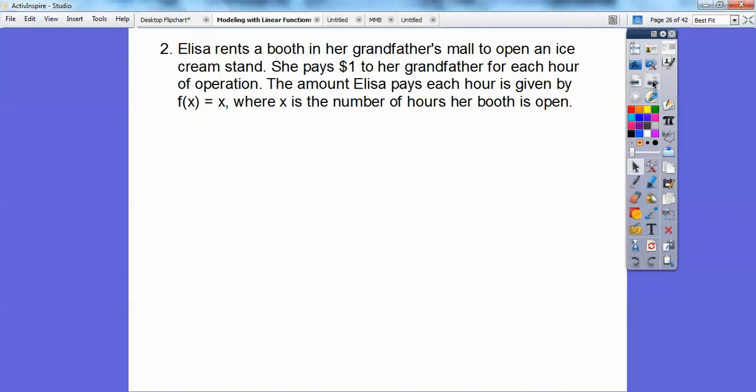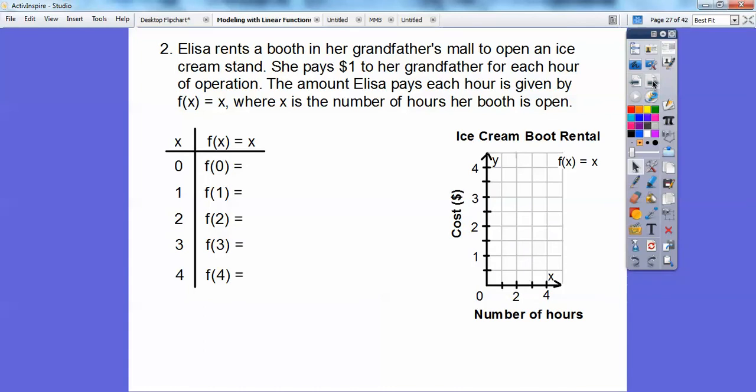Elisa rents a booth in her grandfather's mall to open an ice cream stand. She pays $1 to her grandfather for each hour of operation. The amount Elisa pays each hour is given by f(x) equals x, where x is the number of hours her booth is open. Can we have a fraction of an hour or will she get charged for a fraction of an hour? I'm going to say yes on this.